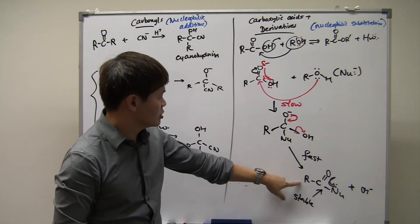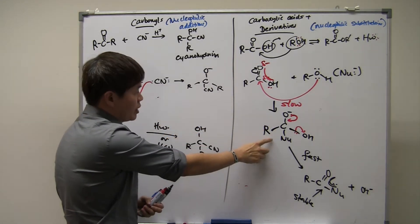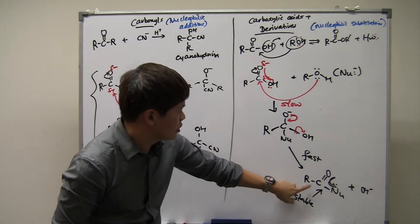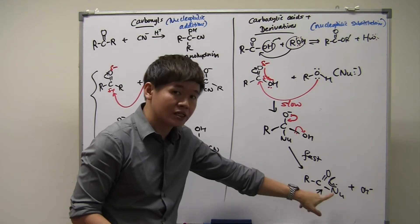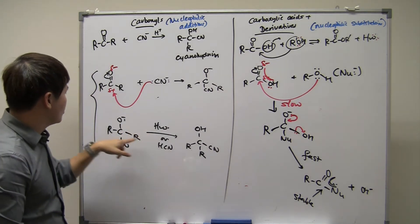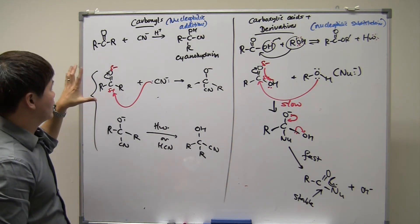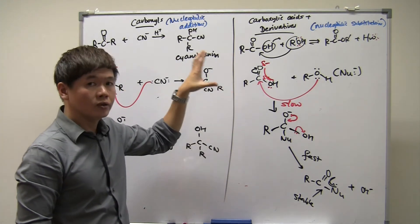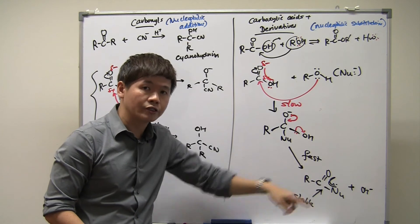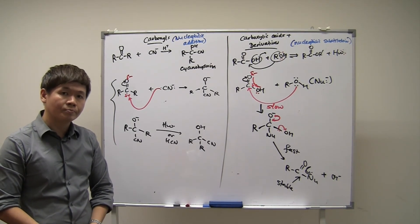Looking at both mechanisms: the similarity is the first step, where the nucleophile comes in to create a tetrahedral intermediate. The difference is the second step — in the derivatives reaction, the second step recreates the resonance-stabilized structure because there's a driving force to reform something stable. In the carbonyl addition, the second step is just protonation with no driving force to revert. This is why carbonyls prefer addition reactions and derivatives prefer substitution reactions — the unusually stable derivative structure always tends to reform its double bond, retaining the C=O. That's all for today. For more information, go to focuschemistry.com. Thank you for watching.